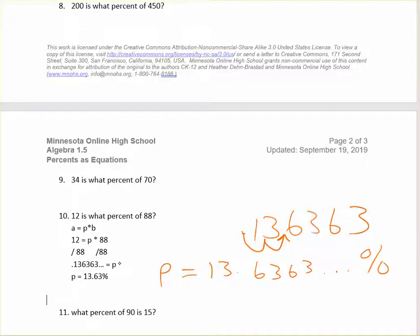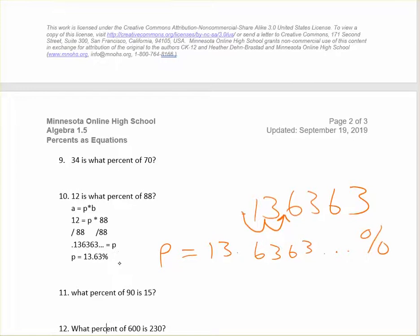And now look at number 11. It's also looking for the percent, but the way they wrote the sentence is a little bit different, or the question. It says, what percent of 90 is 15? So you can keep this order for your equation if you want. You can figure out what's the part. Oh, the part's over here. What's the percent, that's over here? And here's the whole.